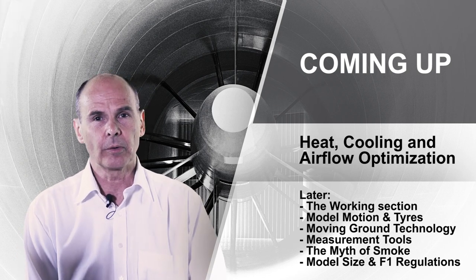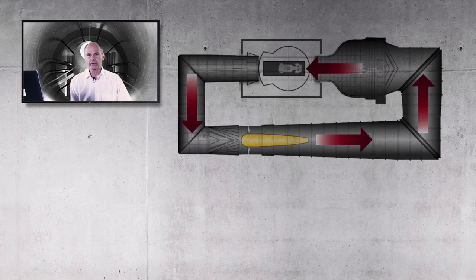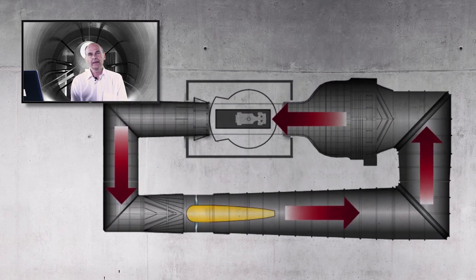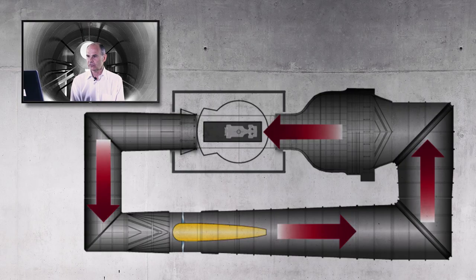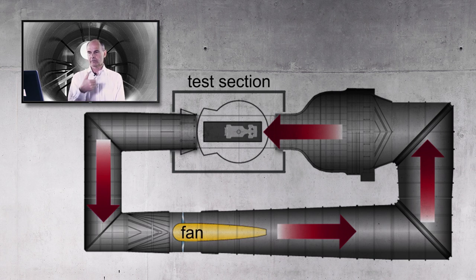One of the reasons we use what we call a closed circuit — a circuit that takes the air around a loop — is so that we can continue to use some of the energy we put into the air to drive it around the wind tunnel. We reuse that air. It's just a more efficient way of using the electricity we use to drive the air around. The wind tunnel is a sort of an odd-looking shape, with our fan almost opposite the working section in the circuit.